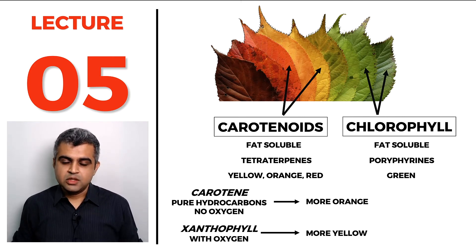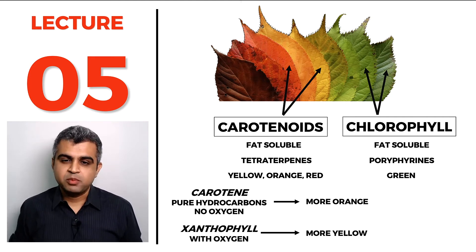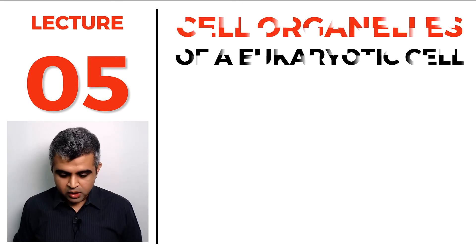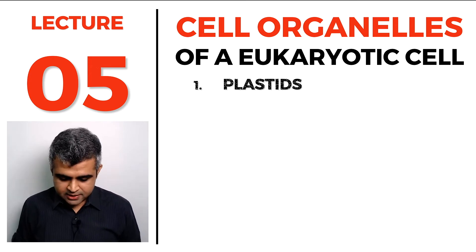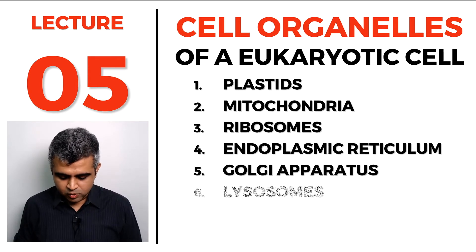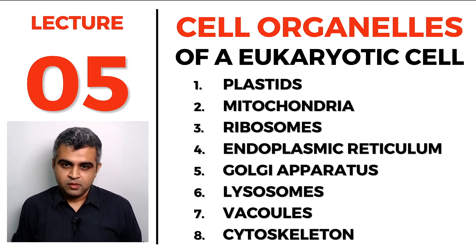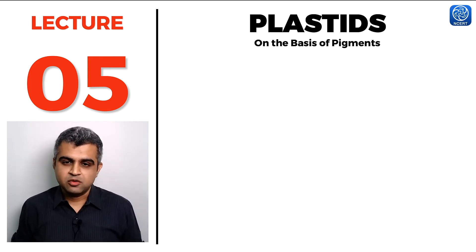After reviewing Greek and Latin words and pigment types, we spoke about the cell organelles found in a eukaryotic cell — a list including plastids, mitochondria, ribosomes, endoplasmic reticulum, Golgi apparatus, lysosomes, vacuoles, and cytoskeleton. In the previous lecture we finished plastids: cell organelles found in plant cells, classified into three groups based on their pigments.